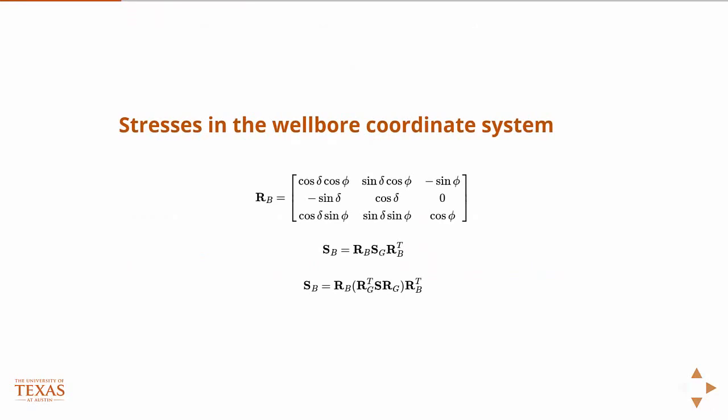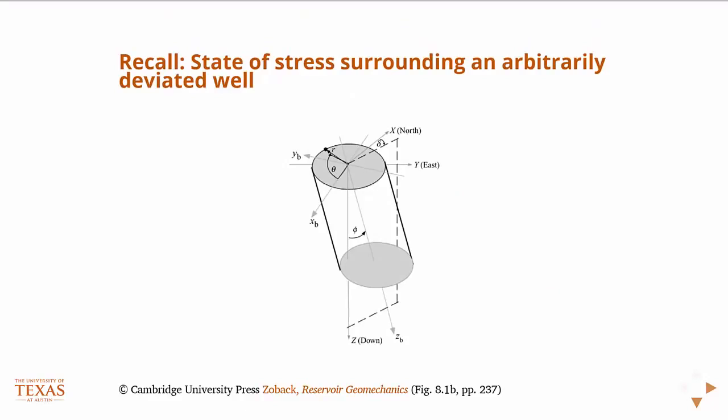If you remember, in this configuration we have two angles: an angle delta, as I have it drawn here, that is the angle of orientation of the toe of the well — the toe being the end of the well — with respect to north, essentially. And then the deviation from the vertical is this angle phi. So if phi were 90, then that would be completely horizontal.